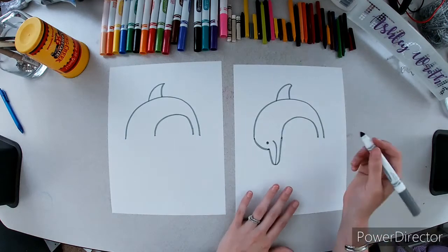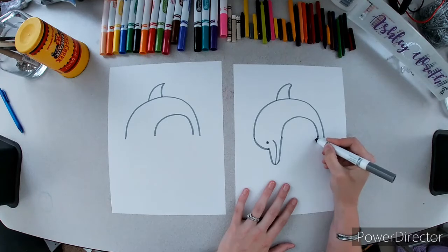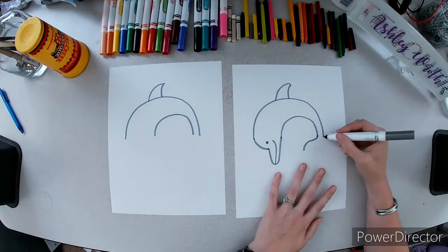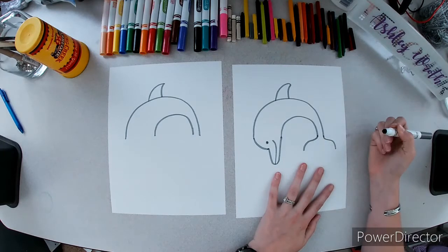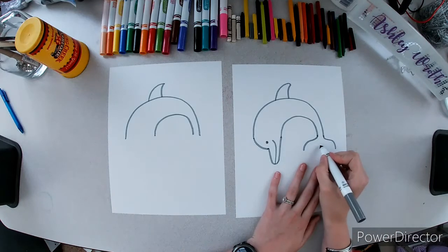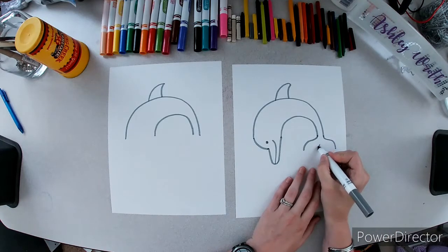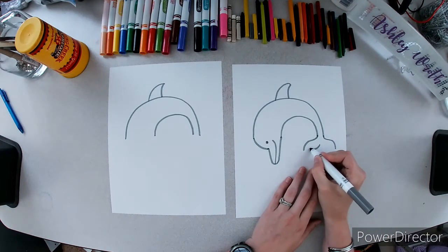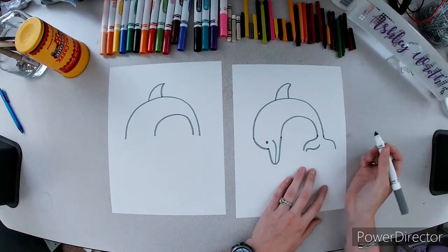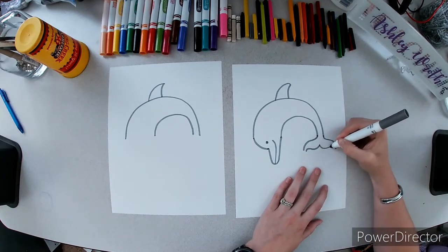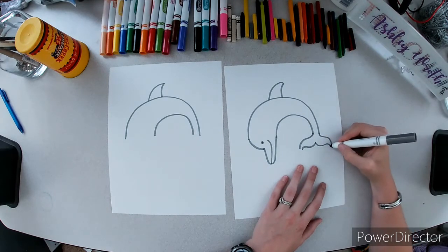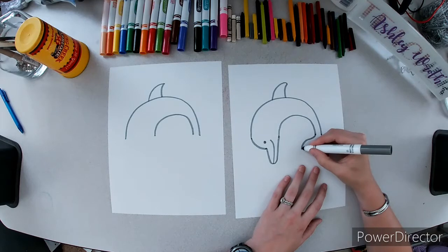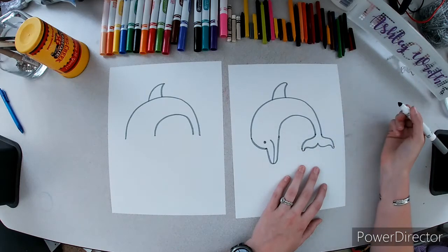Now for our dolphin's tail we're going to curve down, over, and down. Down, over, and down. Now from the middle right here I'm going to do a curve, curve and a curve. Then I'm going to do a U-shape on each end to connect them.